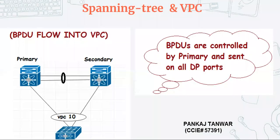In our previous section we have seen the behavior of spanning tree along with VPC. The problem with the normal design was that when there was an issue in the root bridge, or when the root bridge goes down, we experience three seconds of disturbance in our network. And when the root bridge comes back again, we will experience three seconds of disturbance again. So how can we mitigate this problem?